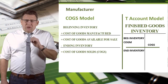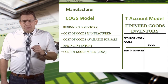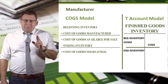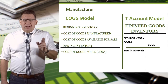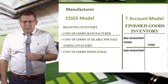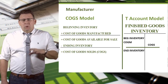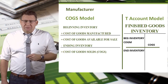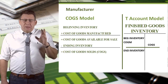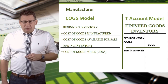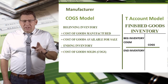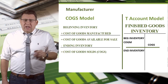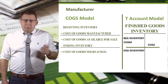Manufacturers don't buy goods for resale — they make goods. So the concept is the same, but instead of purchases, we will replace that with the cost of goods manufactured. This name is exactly what it represents: it's how much it costs us in materials, labor, and overhead to make our products.